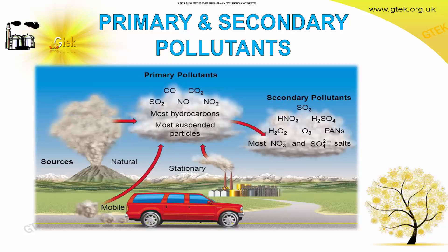The primary pollutants are directly emitted from sources like vehicles or factories — these are carbon monoxide, carbon dioxide, most hydrocarbons, and most suspended particles. These primary pollutants then react to form secondary pollutants such as nitric acid, sulphuric acid, and many other chemicals.